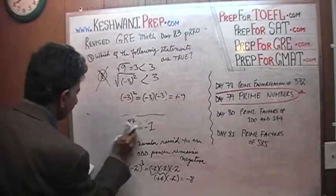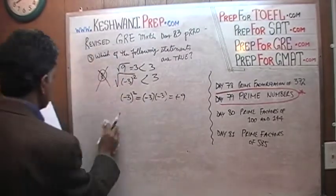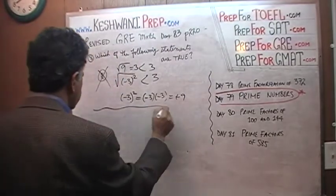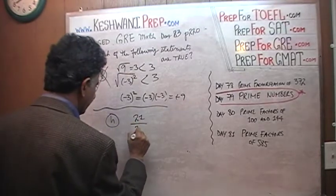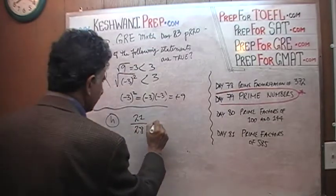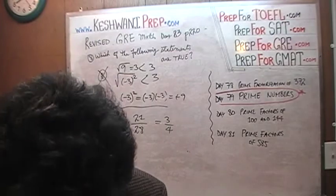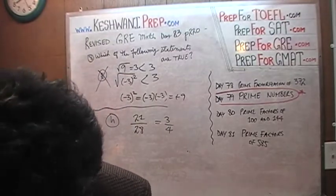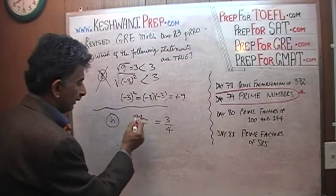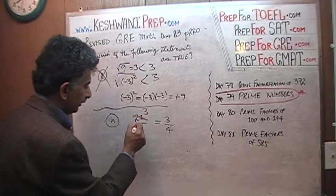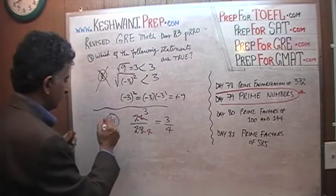Statement H: 21 over 28 — we are told — is equal to 3/4. What can we divide 21 and 28 by? The common factor is 7. 21 divided by 7 is 3, and 28 divided by 7 is 4. So 3/4 does equal 3/4. It is true.